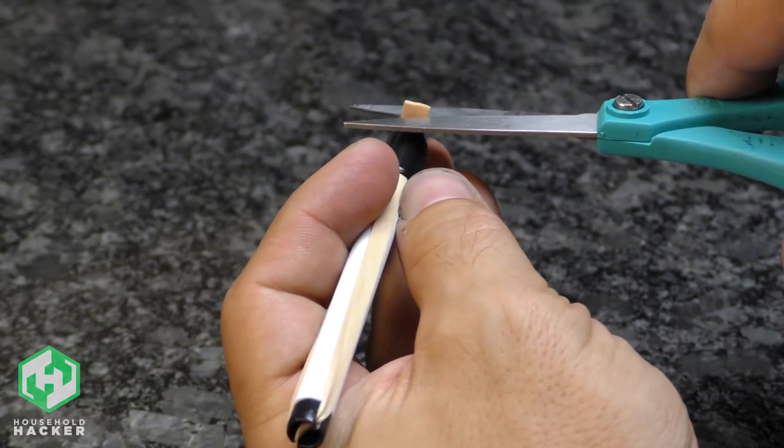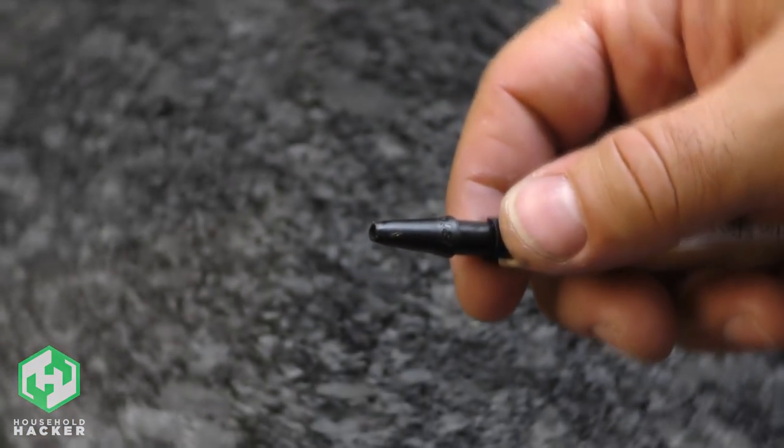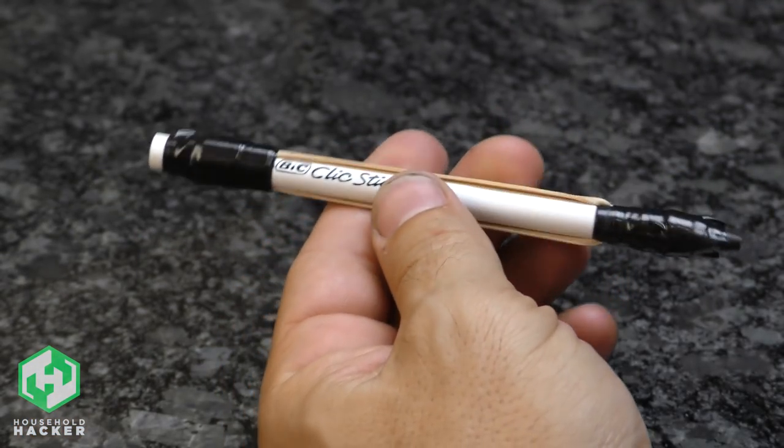For more power, repeat this process with the second rubber band. To add a better grip to the handle, tape either a pen cap or the front of the mechanical pencil from earlier to the end of the eraser holder. You've successfully created a mechanical pencil shooter. All you need is some ammo.